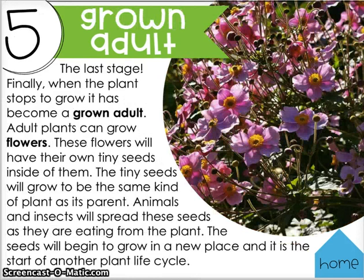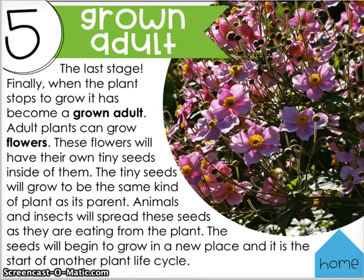Finally, the last stage of the plant life cycle is the grown adult. When the plant stops growing it has become a grown adult. Adult plants can grow flowers, and these flowers will have their own tiny seeds inside of them. The tiny seeds will grow to be the same kind of plant as its parent. Animals and insects will spread these seeds as they move from plant to plant, and those seeds will begin to grow in a new place — starting another plant life cycle.